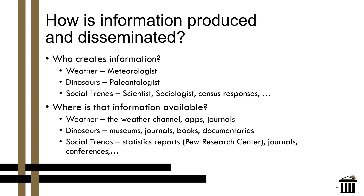The second thing you want to think about is where that information is going to be available. A meteorologist who is creating information about weather is going to make that information available through the weather channel, through weather apps, or perhaps environmental journals if the information is more long-lasting or long-reaching instead of just what the weather is today. If you're looking at information about dinosaurs, paleontologists would be discovering that information, and it will be available in museums, journals, books, perhaps documentaries, or children's programming — all very valid ways of disseminating information based on the topic.